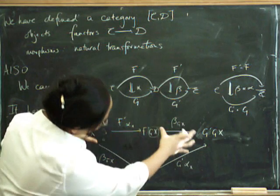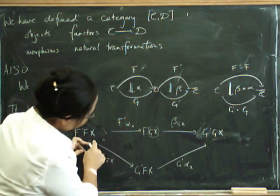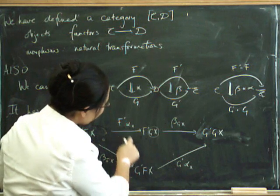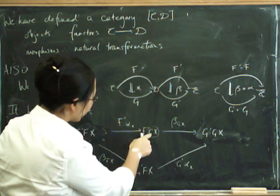Because look, if we sort of turn ourselves this way up a bit, this is a component of beta, and this is a component of beta. And we're regarding alpha X as being a morphism from F of X to G of X.